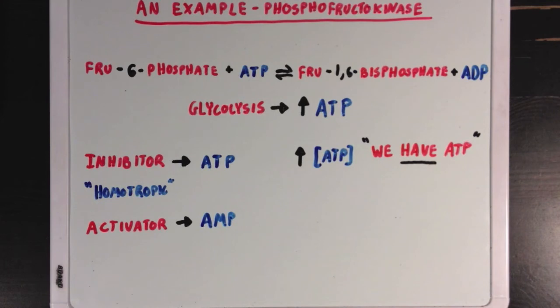AMP, which is used up ATP, is an activator for phosphofructokinase. This also makes sense, because if AMP levels are high, then ATP levels are probably low. And it's like the cell saying,